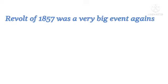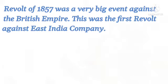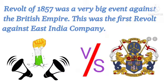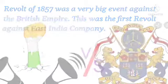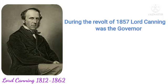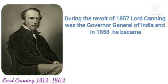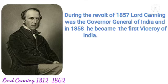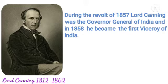The 1857 revolt was against the British — a very widespread and significant event. This was called the first organised movement against the East India Company. Here I would like to tell you a very important point, so please write it down in your notes. Political, socio-religious and economic discontent was not confined only to the civilian population.